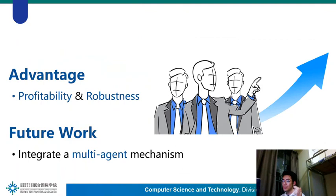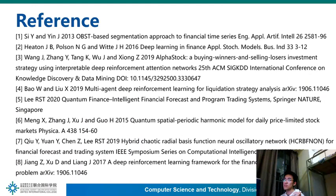In summary, through implementing two cooperating DRL agents, our portfolio management system shows superior performance in making profits over a range of previous methods, on both test datasets and unseen datasets. Quantum finance portfolio investment has its potential in trading, and we are also considering improving it with multi-agent mechanisms. Thank you.